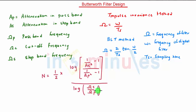This will give us the order of the filter. There is another equation, a similar formula but using different terms. That is N is equal to log of 1 upon delta S square minus 1 upon 2 log of omega S upon omega C.